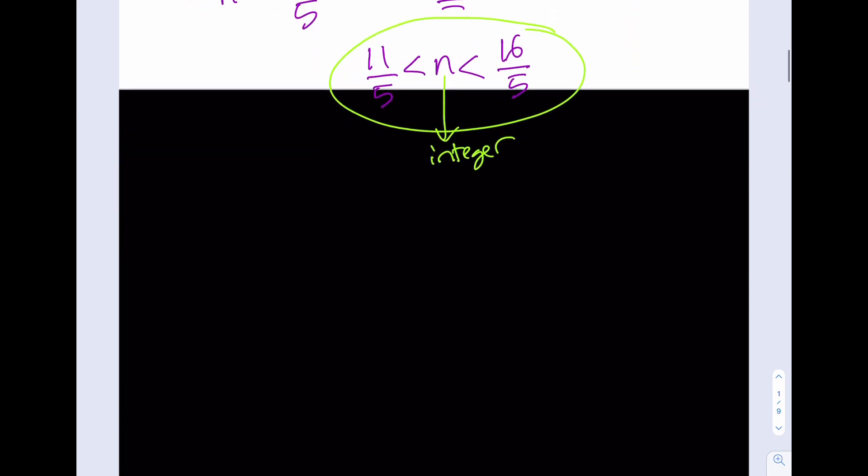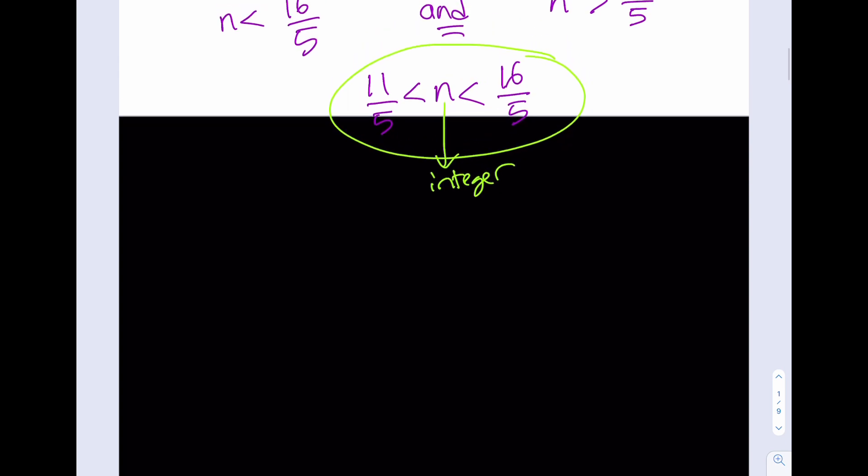Since n is an integer, what are we supposed to have? We're supposed to have a single value here. 11 fifths is 2.2, 16 fifths is 3.2. So between those two values, we only have one integer. So n needs to equal 3. Awesome.